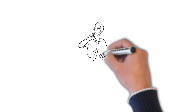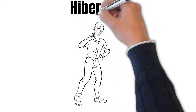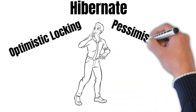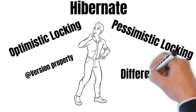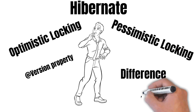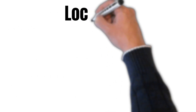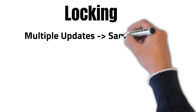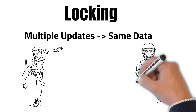Hello friends, welcome to the video. In today's video you will learn about Hibernate's optimistic locking, pessimistic locking, the version property, and what's the difference between optimistic and pessimistic locking. Locking is basically a way to ensure that multiple updates to the same data don't interfere with each other.